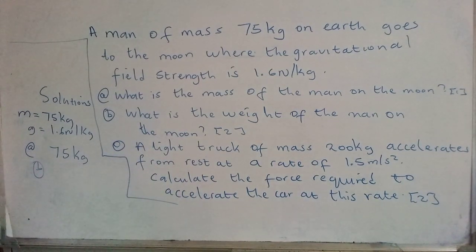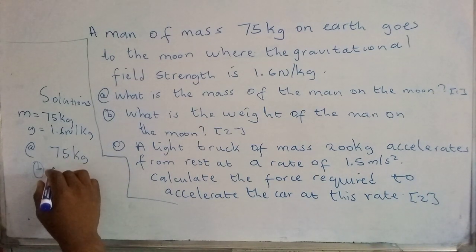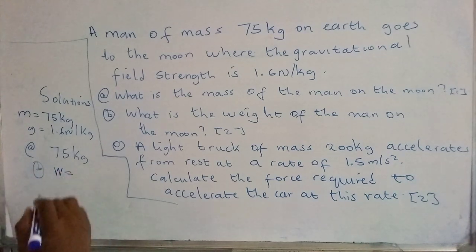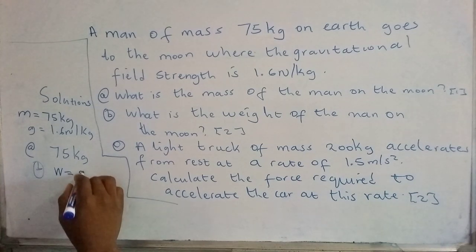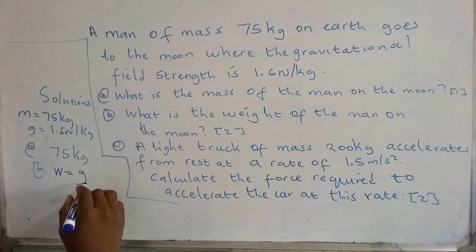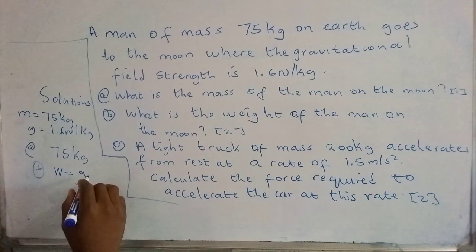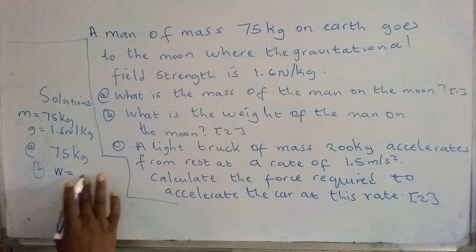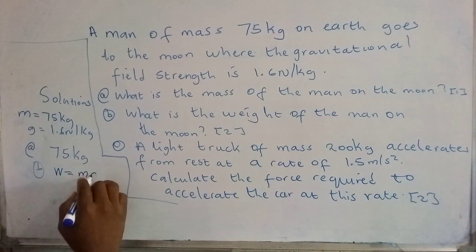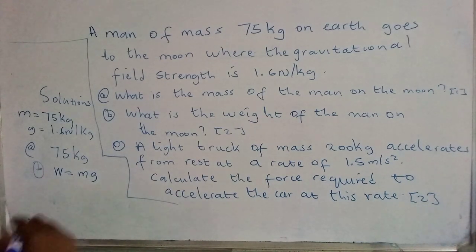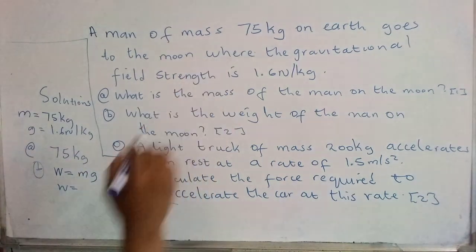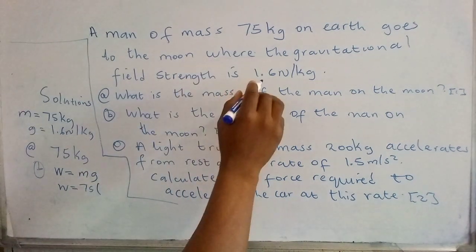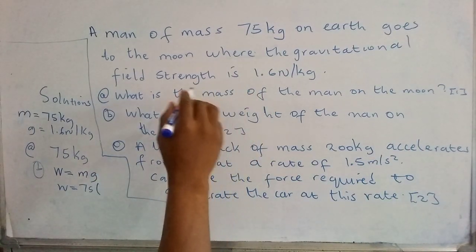Part B is asking, what is the weight of the man on the moon? What you need to do is use the formula: weight is given by gravitational field strength times mass. So we say mass times gravitational field strength. Weight is given by the mass of the person, that's 75 kg, and then the gravitational field strength.